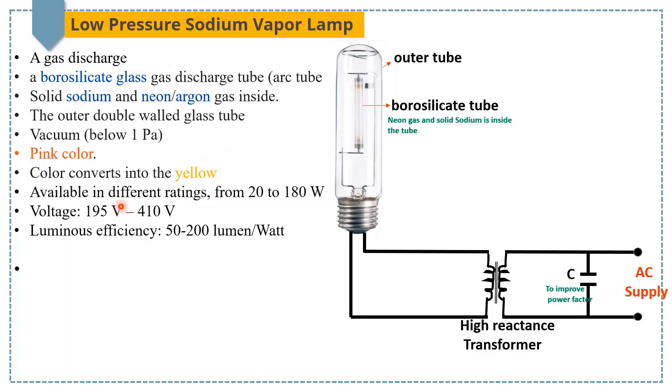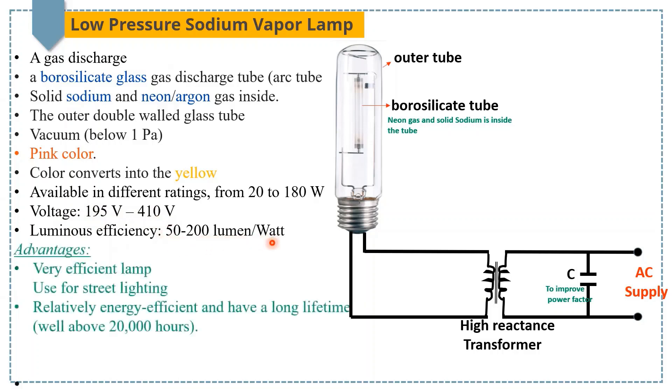There are different lamps available with different ratings from 20 to 180 watt and operating at different voltages starting from 195 volt up to 410 volts. Luminous efficiency varies from 50 up to 200 lumen per watt. Advantages include: they are very efficient, used for street lighting, relatively energy efficient and have a long lifetime of up to or more than 20,000 hours.